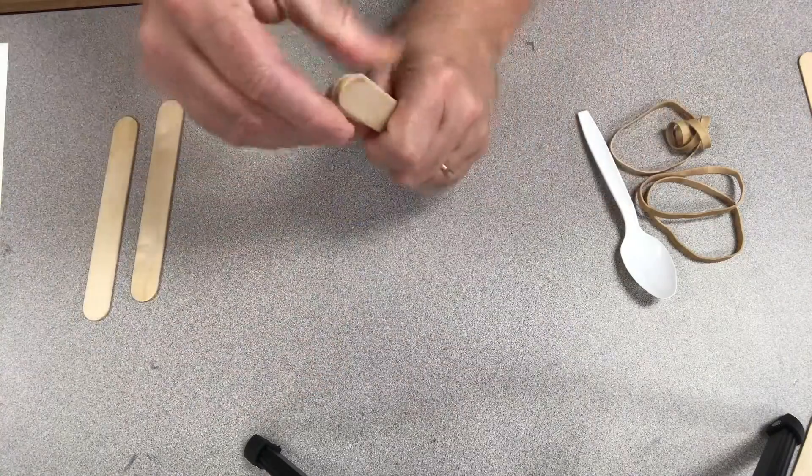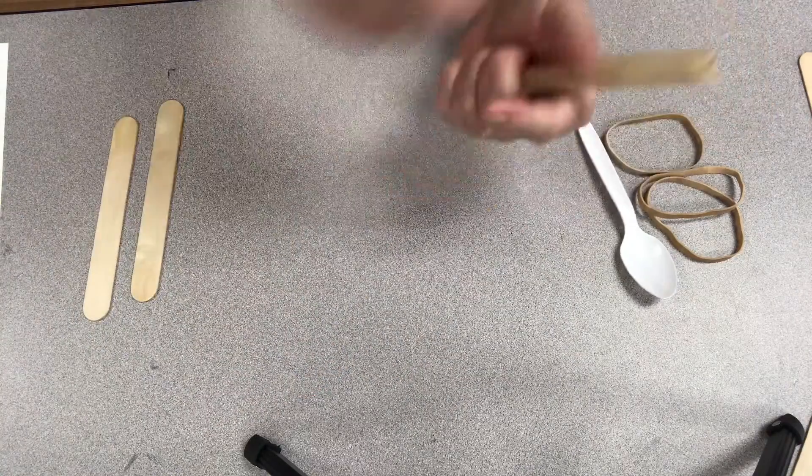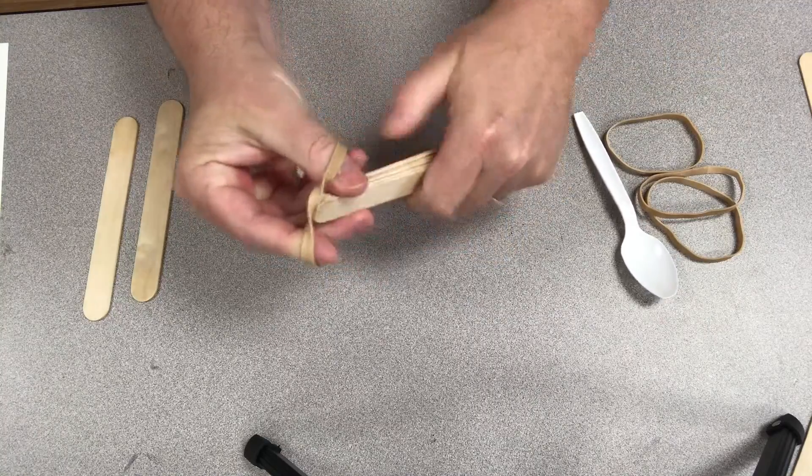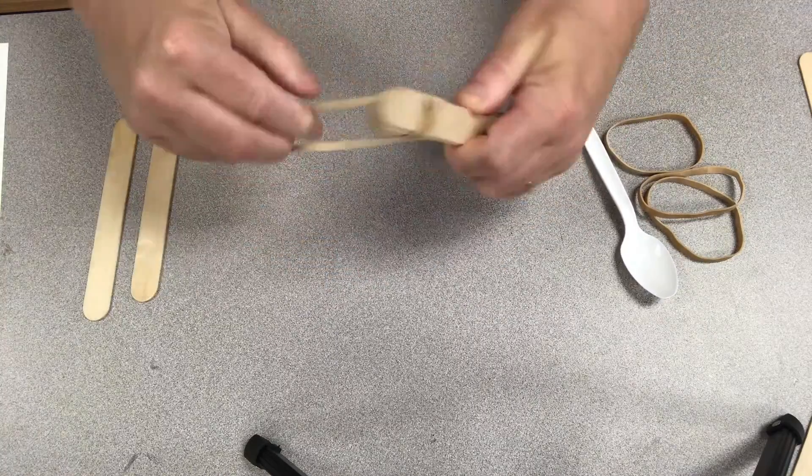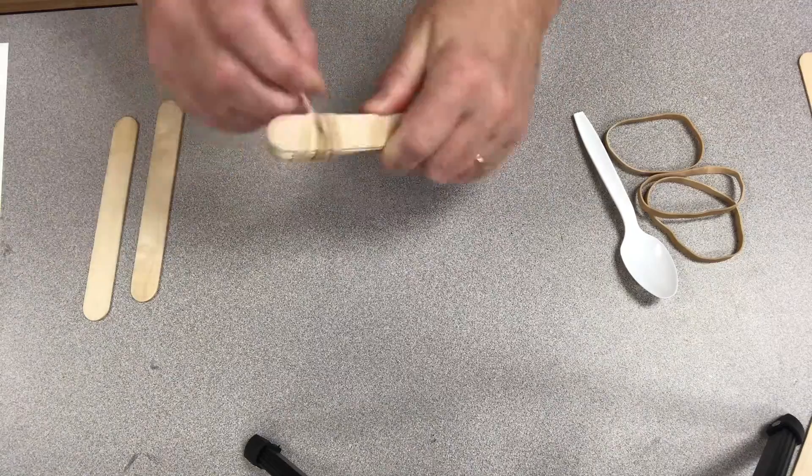Nice and tight. Then we're going to take one of the rubber bands and we're going to put it around one end several times. Wrap it around really tight.